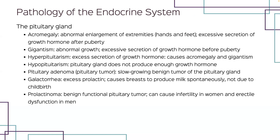Talking about pathology of the endocrine system — many of these are based directly on medical terminology. Acromegaly is abnormal enlargement of the extremities due to excessive secretion of growth hormone after puberty. Gigantism is an excessive growth disorder due to that hormone before puberty. Hyperpituitarism is excess secretion and hypopituitarism is insufficient secretion from the pituitary. A pituitary adenoma is essentially a tumor of the pituitary gland. Prolactorrhea is excess prolactin, causing spontaneous milk production not due to childbirth. A prolactinoma is a benign functional pituitary tumor that can cause infertility.